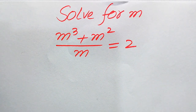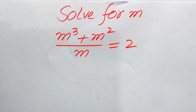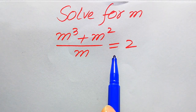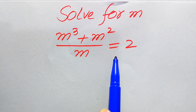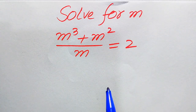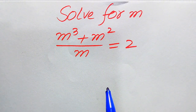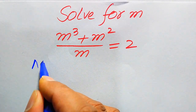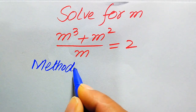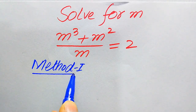Hello everyone, welcome. We solve this nice math algebra problem. We have (m³ + m²) divided by m equals 2, and we solve this problem for all values of m. First we need to find all the roots of this equation, and at the end we will verify which of the roots are solutions and which are extraneous roots. We solve this problem using two methods.